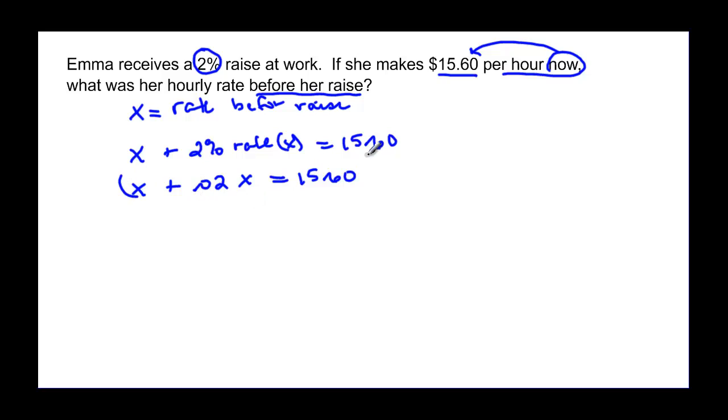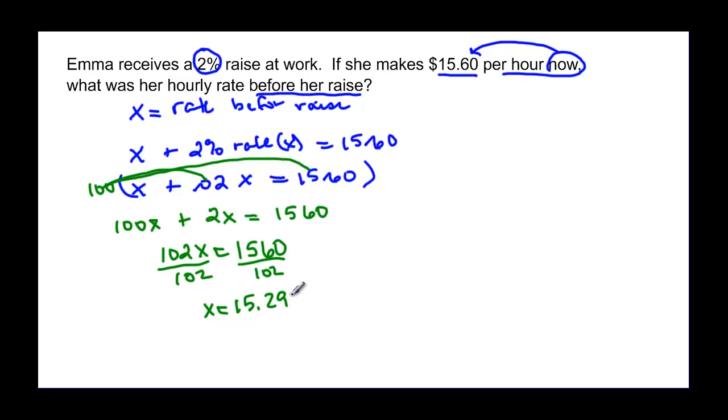We have decimals here, so we have to multiply by 100. You'd have 100x plus 2x, and distributing all the way over here equals 1,560. So 102x is equal to 1,560. And when we divide by 102, we find out that her original rate was 15.29. It's actually 15.294, but since we're talking about dollars and cents, we're going to say that she made $15.29 per hour before the raise.